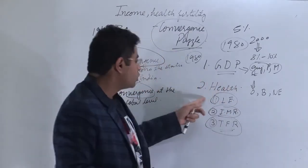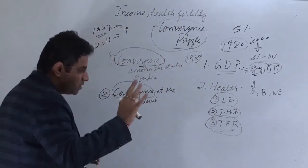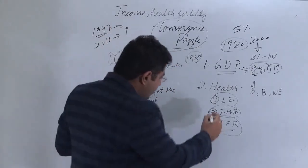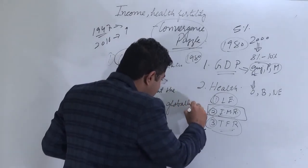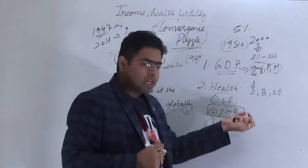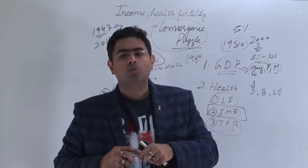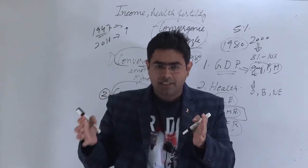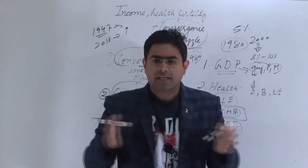Coming back to the topic of health, this chapter on Economic Survey has dealt with three aspects: life expectancy, infant mortality rate, and total fertility rate. As far as infant mortality rate is concerned, globally India has not been able to converge with the states and countries having lower infant mortality rates. With respect to convergence between Indian states, some convergence has taken place, but it is not comparable to the levels achieved by countries of the world or by China.